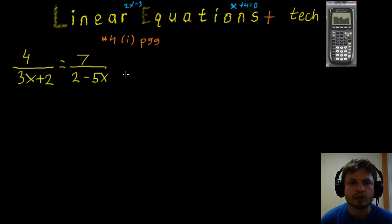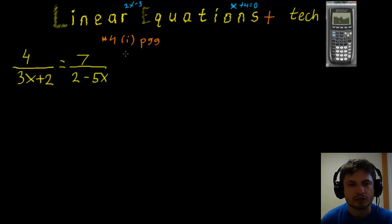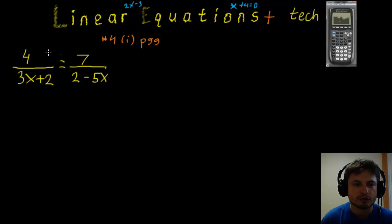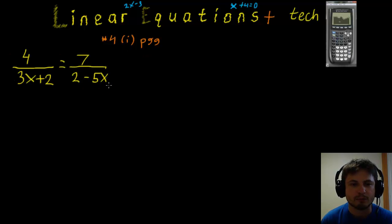Let's start with one of the more difficult questions — that's question 4 on page 99, question (i). The equation is 4 divided by (3x + 2) equals 7 divided by (2 minus 5x).